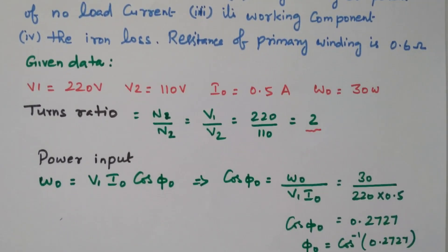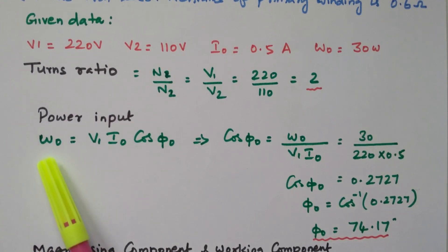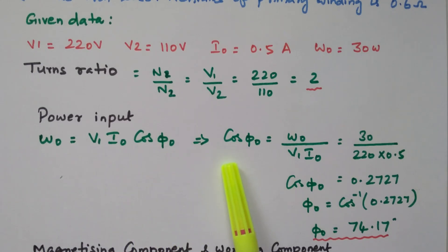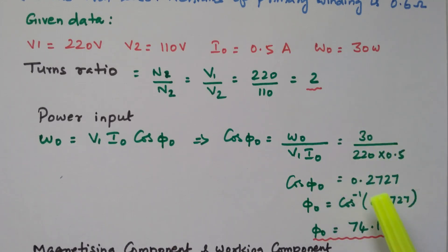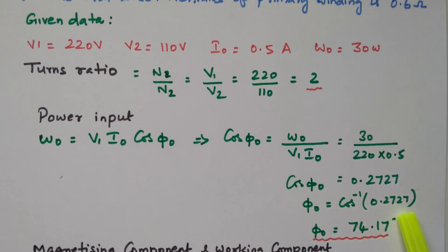The no-load power input is given in the problem. W0 is equal to V1 × I0 × cos φ0, so cos φ0 can be written as W0 divided by V1 × I0. W0 is 30, V1 is 220, I0 is 0.5 ampere. Simplifying, cos φ0 equals 0.2727, so φ0 equals cos inverse of 0.2727, that is 74.17 degrees. This is the angle between current and voltage under no-load condition.